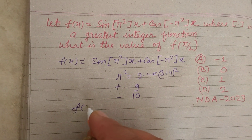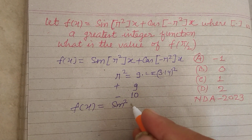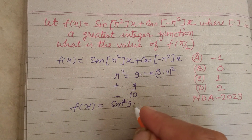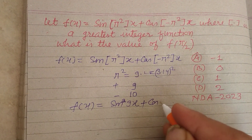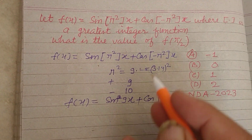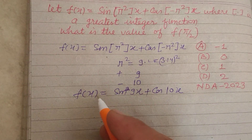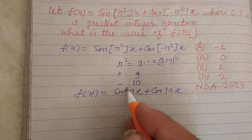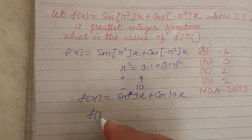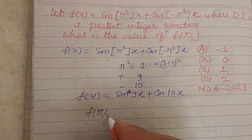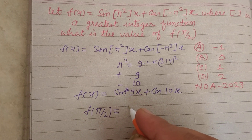Therefore f(x) becomes sin(9x) + cos(10x), because cos(-θ) = cos(θ). So f(x) = sin(9x) + cos(10x). Now put x = π/2.